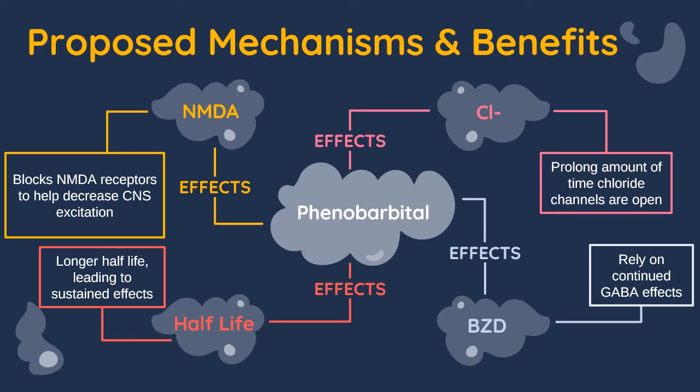The proposed mechanism for phenobarbital works in two ways. First, it prolongs the amount of time chloride channels are open, which enhances GABA's inhibitory effects. It also blocks NMDA receptors to help decrease CNS excitation — which is also what ethanol does. So phenobarbital mimics what ethanol does without actually consuming alcohol.